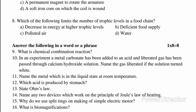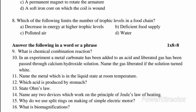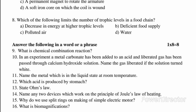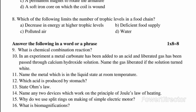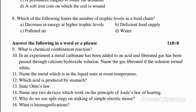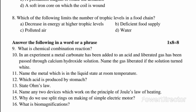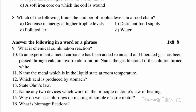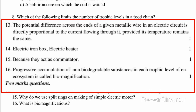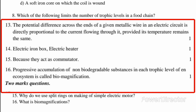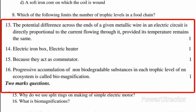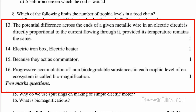Question 12: Which acid is produced by the stomach? Answer: Hydrochloric acid is produced in the stomach. Question 13: State Ohm's Law. Answer: The potential difference across the ends of a given metallic wire in an electric circuit is directly proportional to the current flowing through it, provided its temperature remains the same.